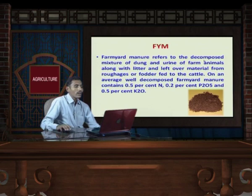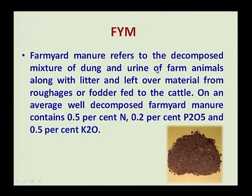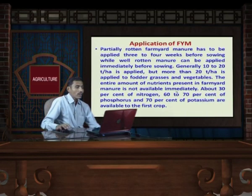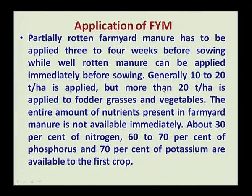Let us start with FYM. FYM refers to the decomposed mixture of dung and urine of farm animals along with litter and leftover material from roughage or fodder fed to the cattle. On average, well-decomposed farm manure contains 0.5 percent nitrogen, 0.25 percent P2O5, and 0.5 percent potassium. For application of FYM, we have to apply it before sowing — at least one month before sowing.